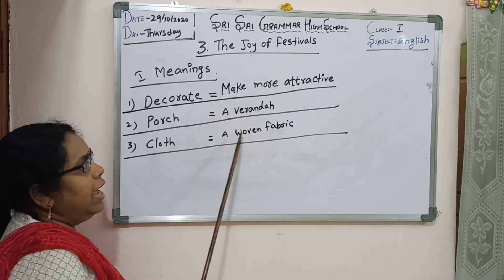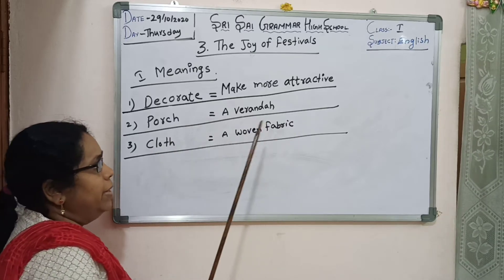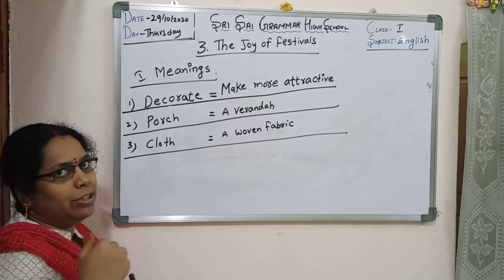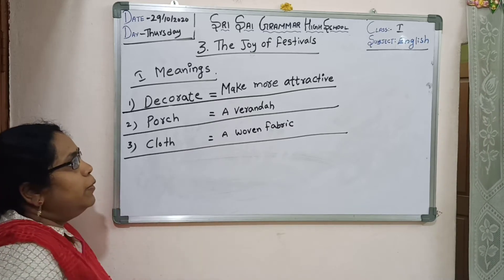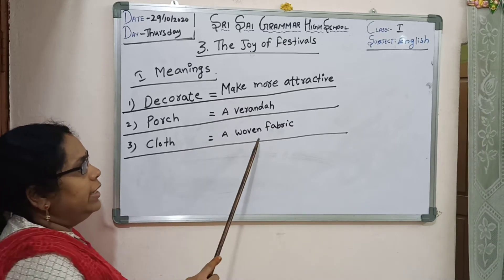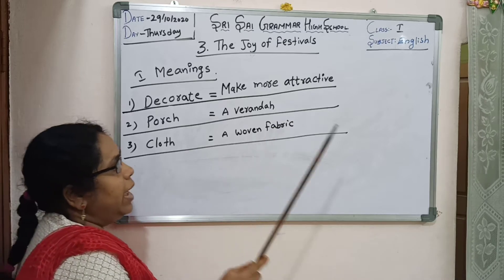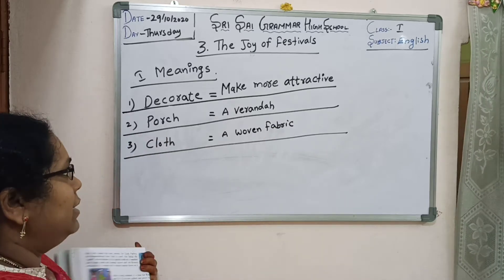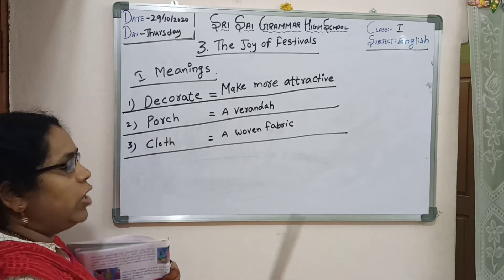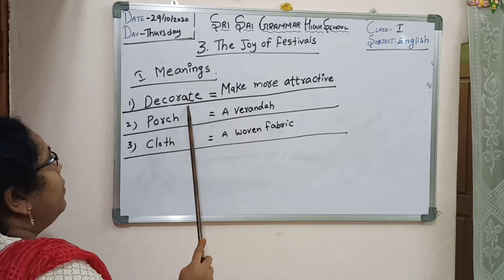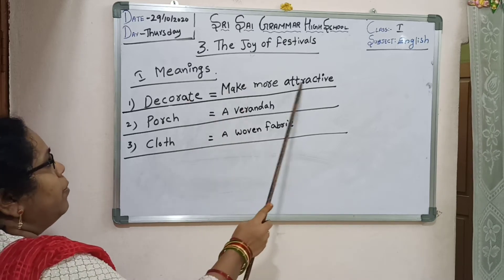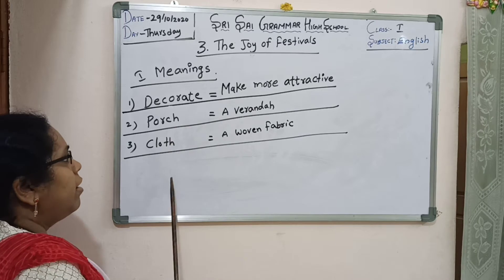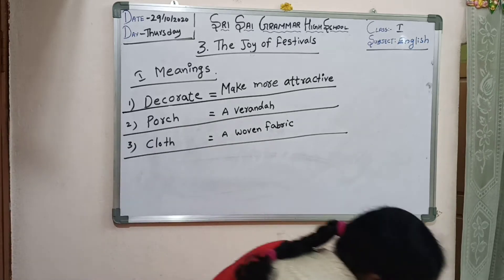Next word: cloth and woven fabric. Cloth — cloth and different fabric. W-O-V-E-N F-A-B-R-I-C — fabric. Fabric means different types of fabric, cloth. So: decorate means make more attractive; ports and Varenda; cloth and woven fabric.